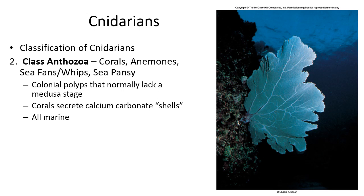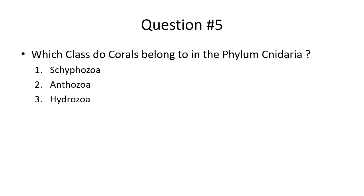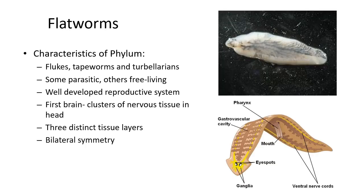Anthozoa includes corals, anemones, sea fans, and sea pansies. These are polyp-dominated and generally create large colonies. They secrete calcium carbonate which forms the hard calcareous structure. Hydrozoa are also mostly polyp with a reproductive medusa. Physalia is one of these with a gas-filled float, making it a pleuston organism. There are some freshwater species in Hydrozoa as well. Question number five: Which class do corals belong to?